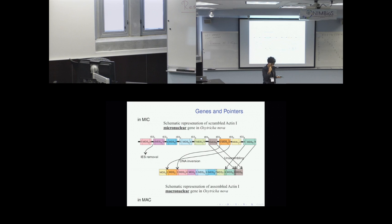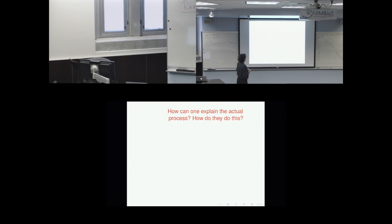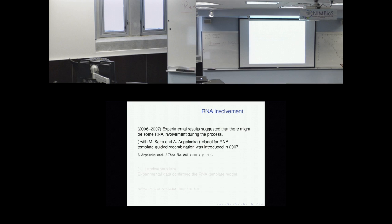The macronucleus contains about 15,000 to 20,000 chromosomes, depending on the ciliate, and every chromosome is one to two genes — they're all very chopped up and small. There are about 100 chromosomes in the micronucleus. The question is: how does this process actually happen? It happens in a fairly short period of time — thousands of genes are reshuffled within 24 hours of development.